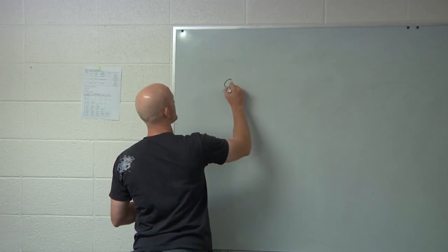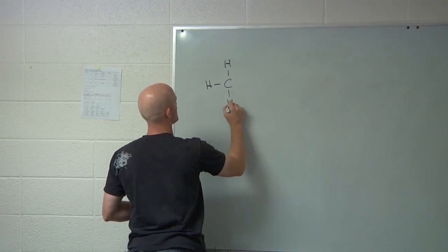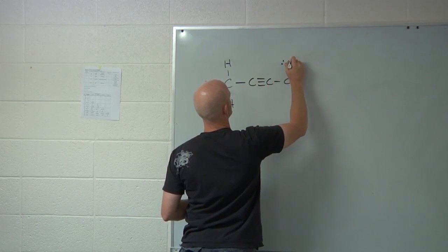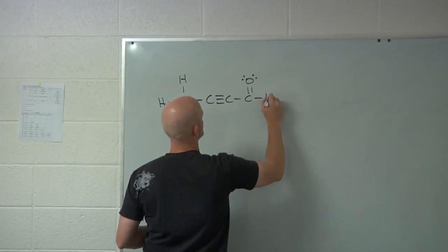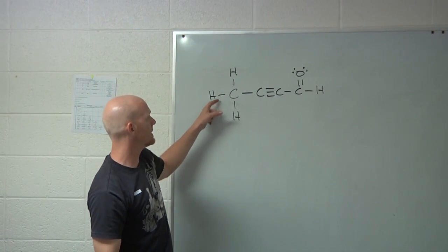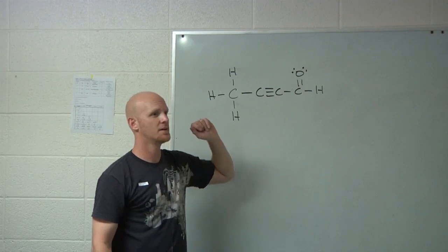We really just got to talk about sigma and pi bonds and hybridization. So if we draw a molecule here, like this guy, you have single bonds, you have a triple bond, another single bond, another single bond, and then a double bond.